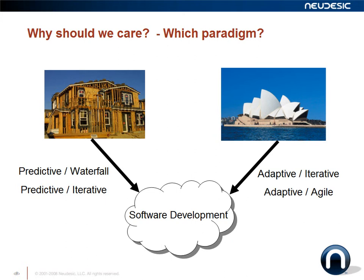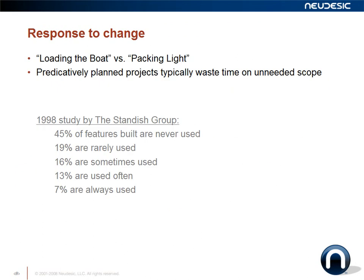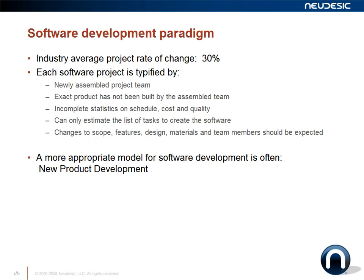Software development faces some of the same challenges. For a predictive waterfall model to work, you can usually absorb about 3% change in requirements or design over the course of a project — and within that variance, the methodology works extremely well. But we all know that in today's environment, change is much higher.